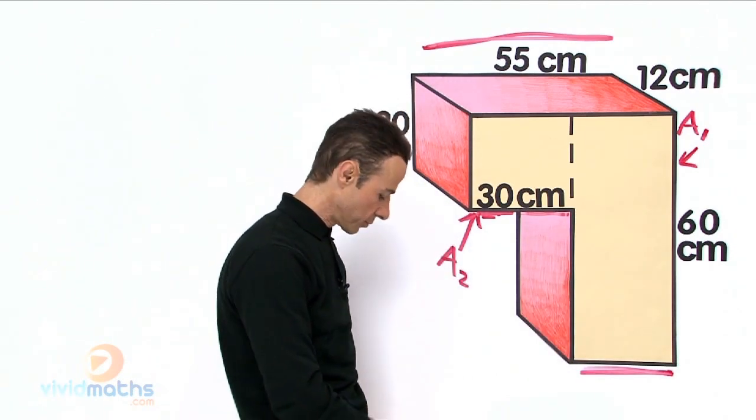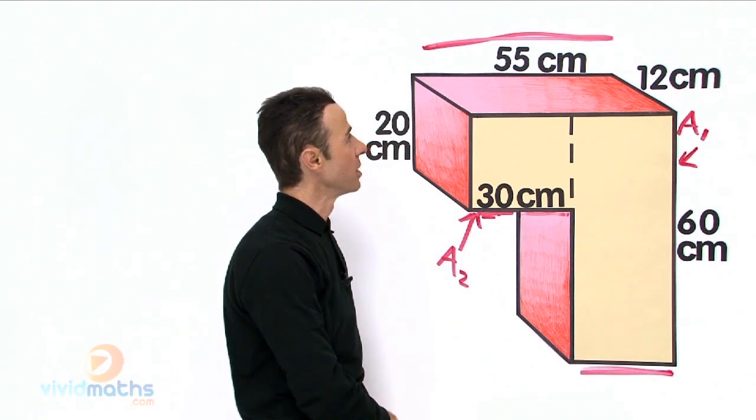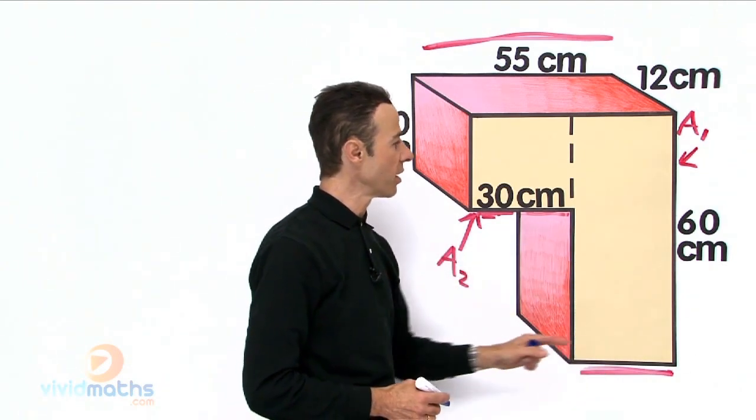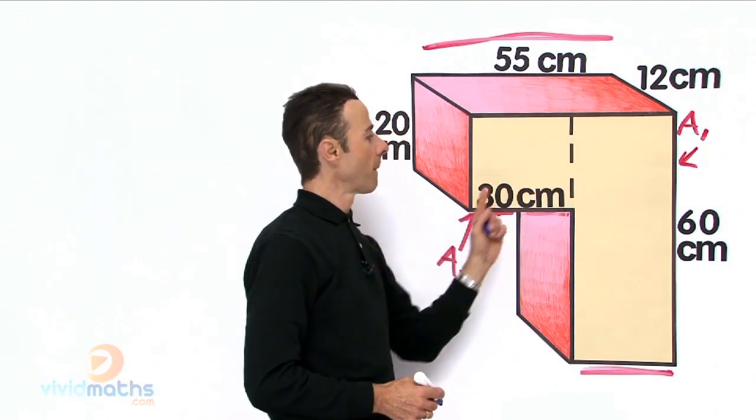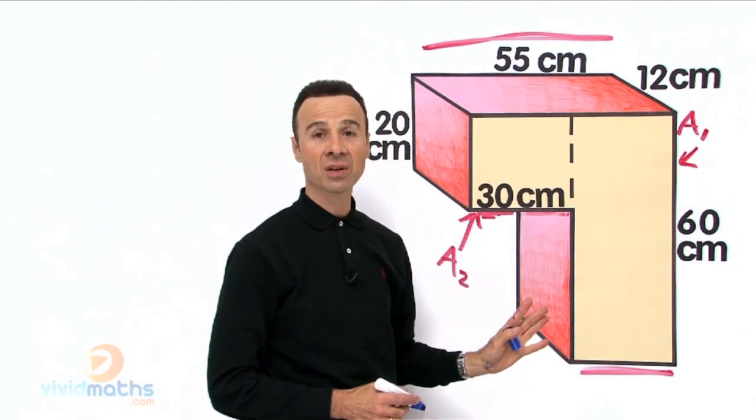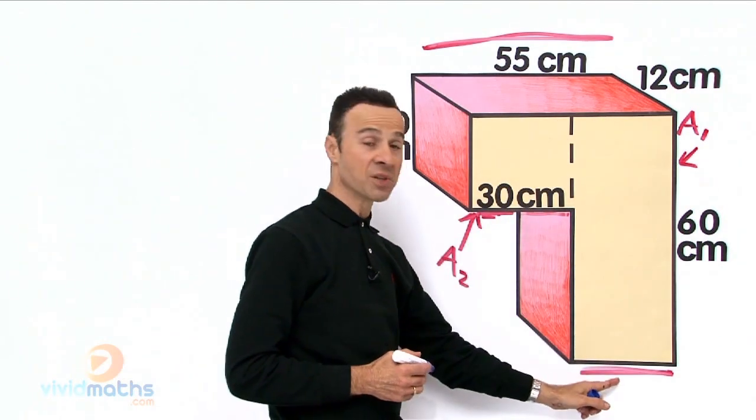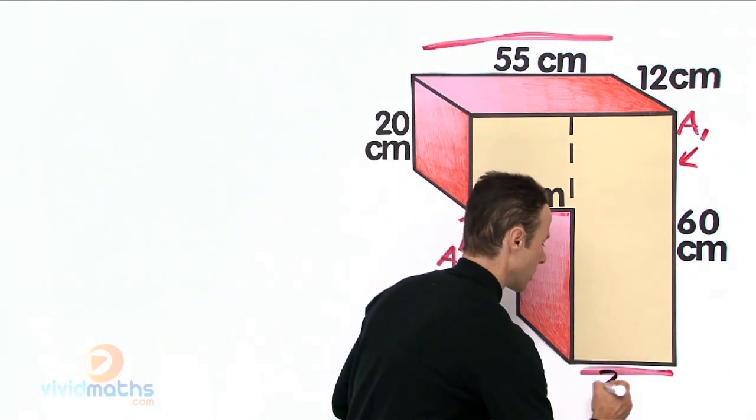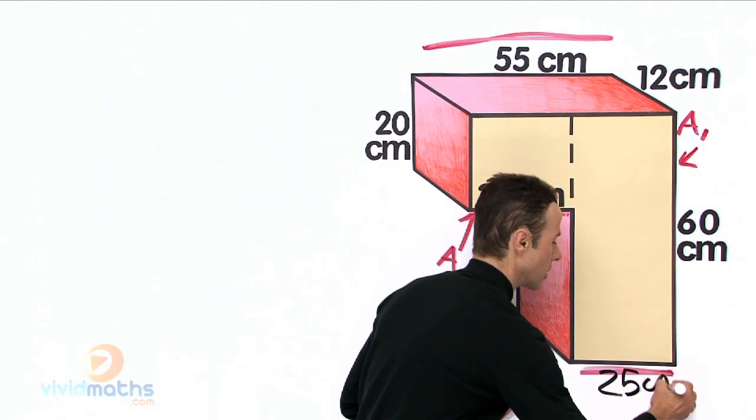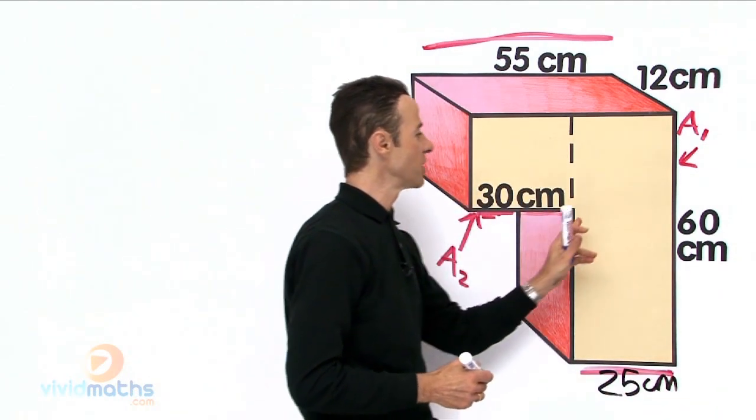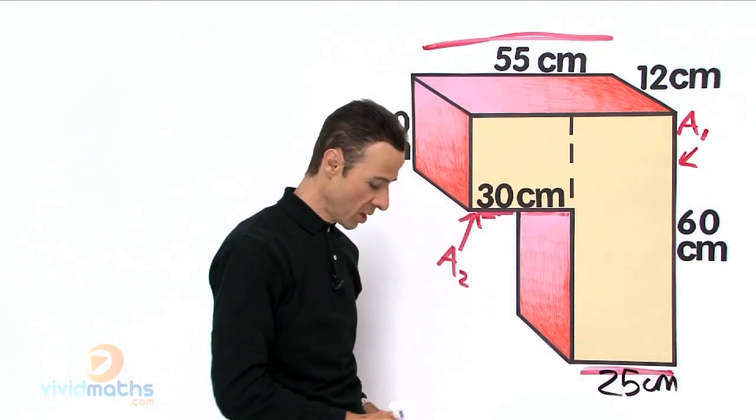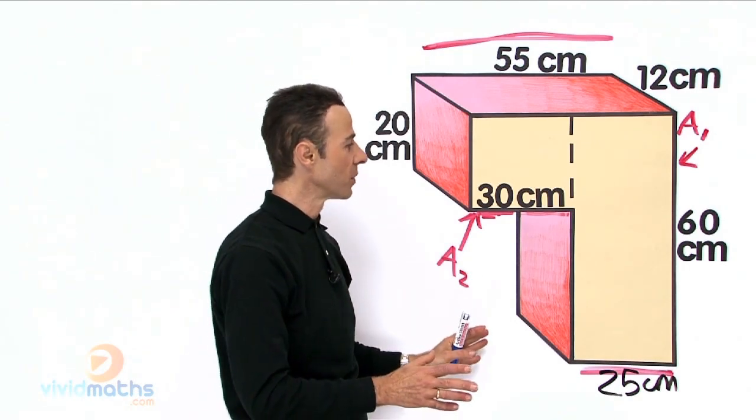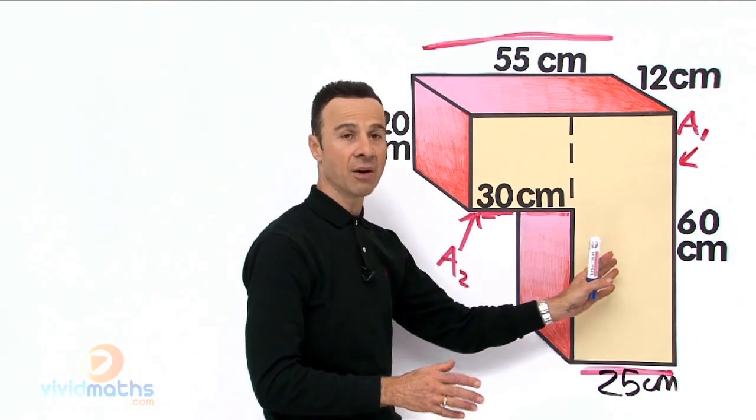So let us do that now, let us work them out. So for area one, right over here, we need to find this length here: 55 minus 30 gives us 25. So that means this missing length there is 25. Can I write that in? Let me write that in. There is our 25, which means this is also 25 across there. Okay we have established that, make sense? Yep. All right.